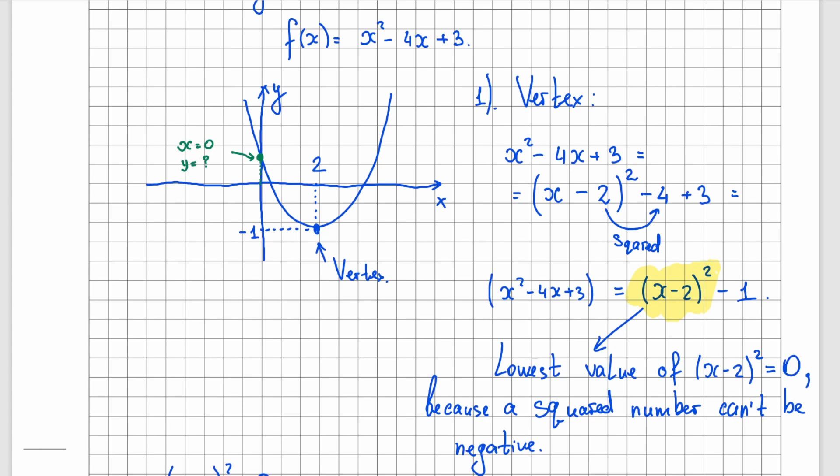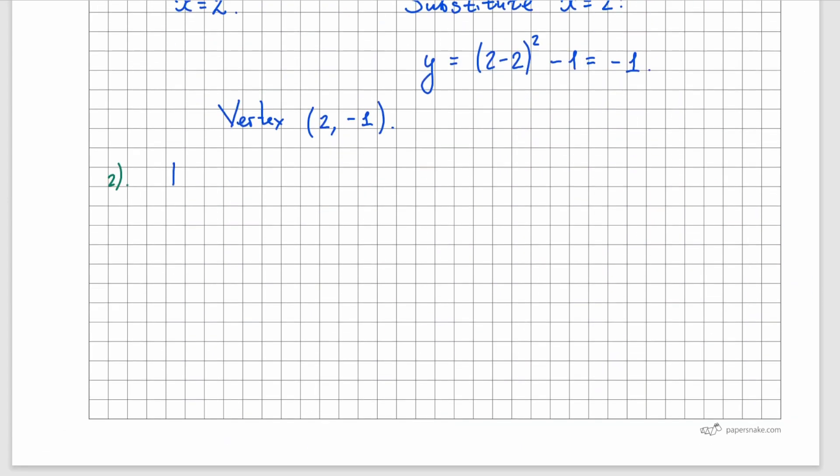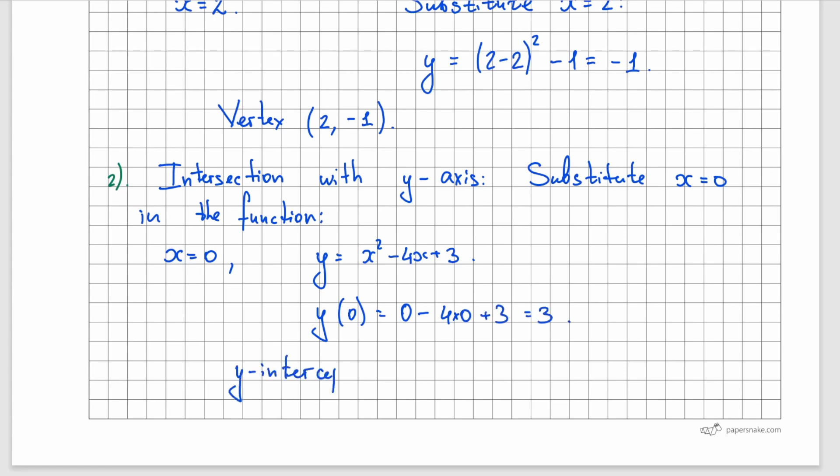And all we have to do is to find the y-coordinate. How do we do that? We just substitute x equals to 0 in the equation of the function. Remember our function is y equal to x squared minus 4x plus 3. And if I let x equal to 0, I will get 0 minus 4 times 0 plus 3, which is 3. So that point has coordinates 0, 3.